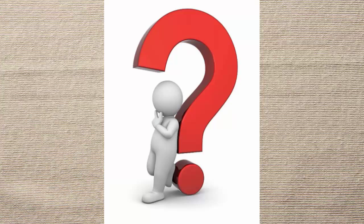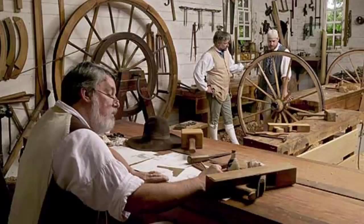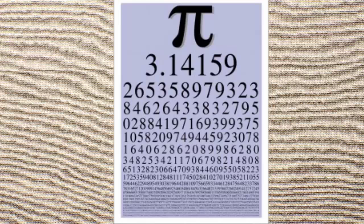But now the question is how to make the rim having exactly the same circumference as the wheel? For this, it needs the knowledge of pi. But actually, the village artisans measure the wheel diameter and take a metal piece with a length of 3.1 times the diameter and bend it to make the rim. They may not know about the pi constant, but instinctively they approximate the pi value to 3.1.